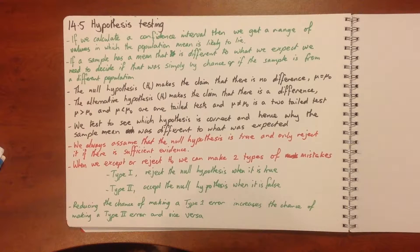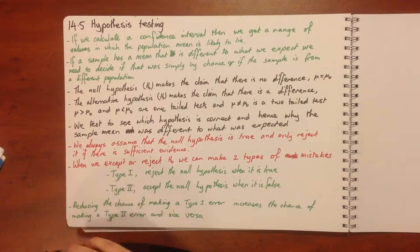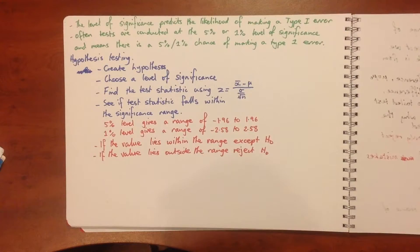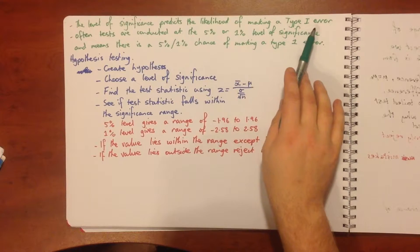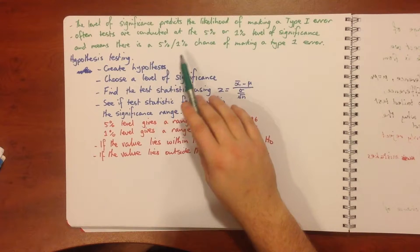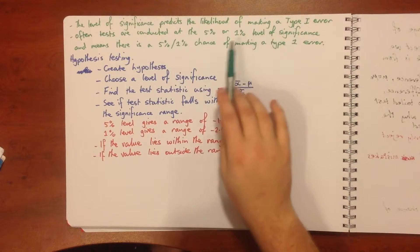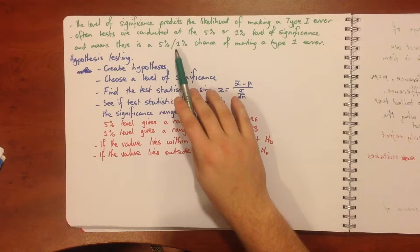If we reduce the chance of making a type 1 error then we increase the chance of making a type 2 error and vice versa, so none of this is ever rock solid. The level of significance predicts the likelihood of making a type 1 error. Often tests are conducted at the five percent or one percent level of significance, meaning there is a five percent or one percent chance of making a type 1 error.